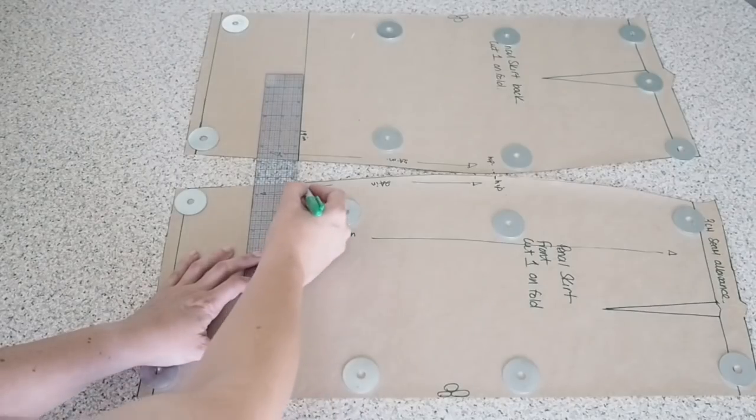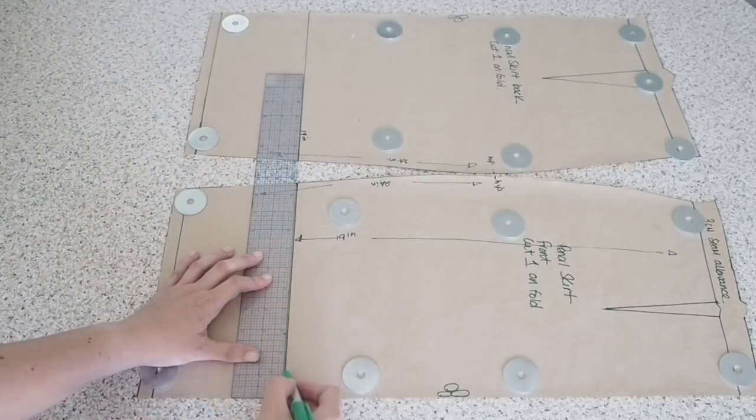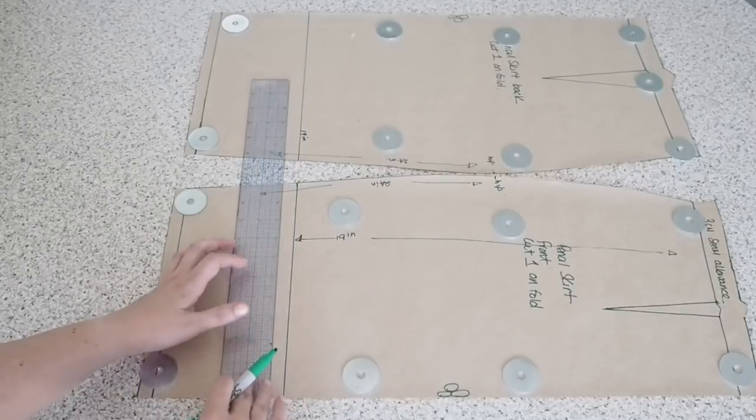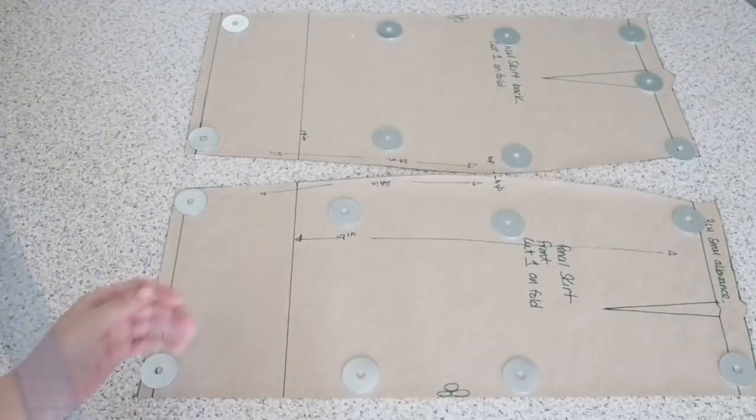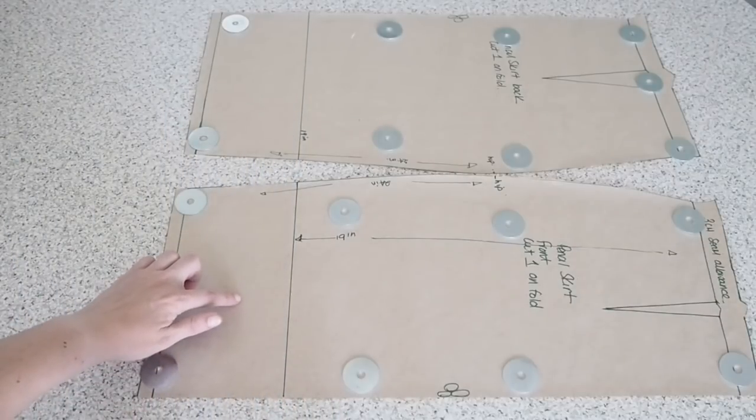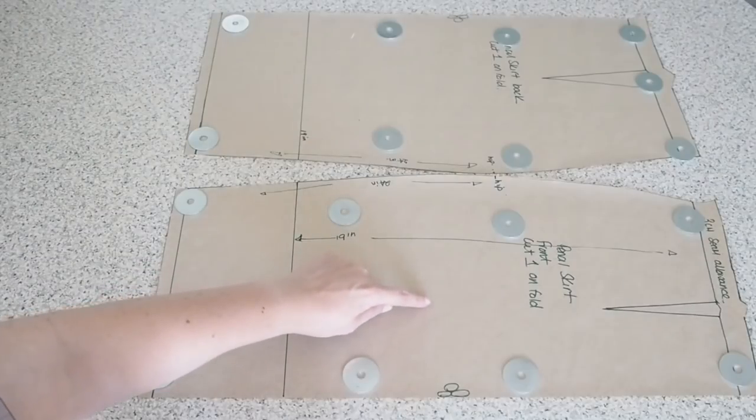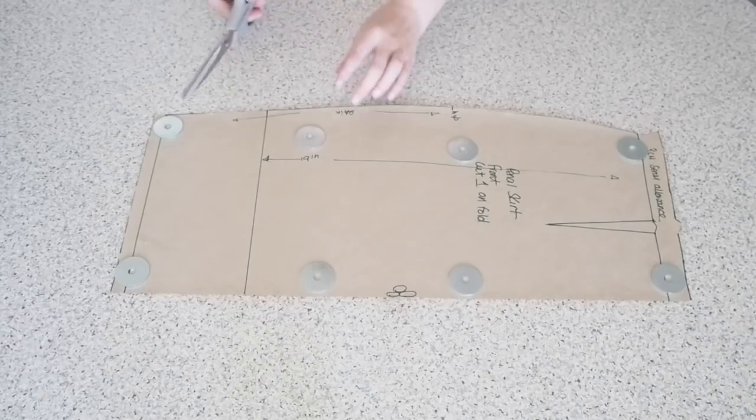So I've just measured up from the bottom hem of the skirt five inches, because that's the depth I want my flounce to be. Again you could have your flounce to be any depth, just for this skirt I want mine to be five inches.